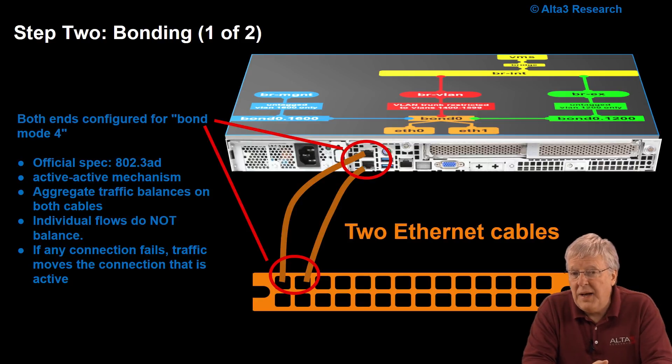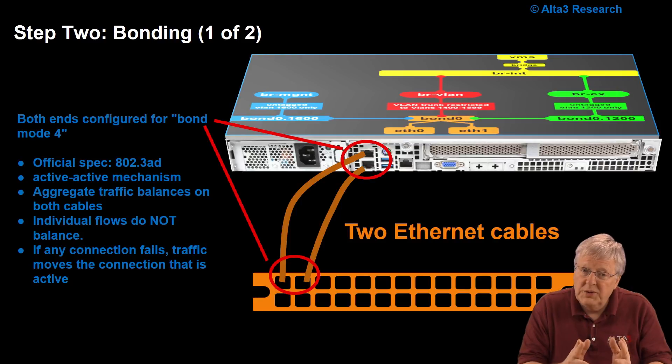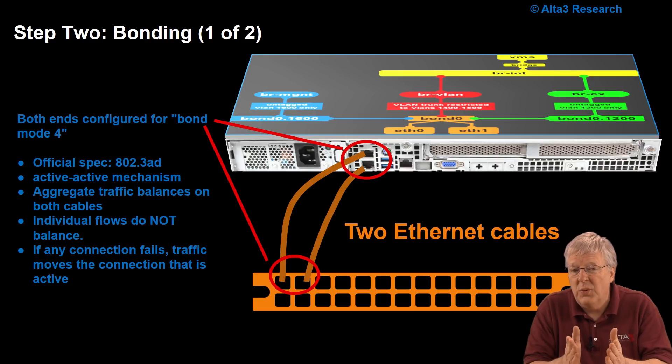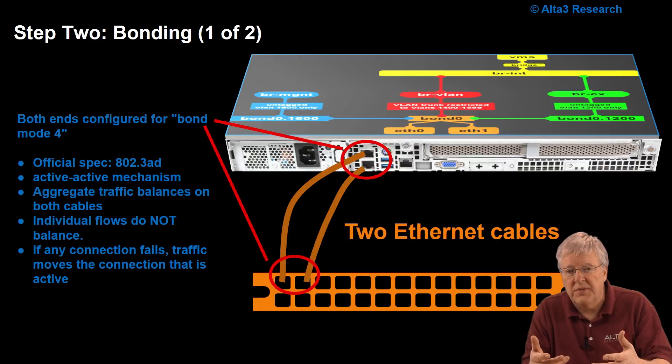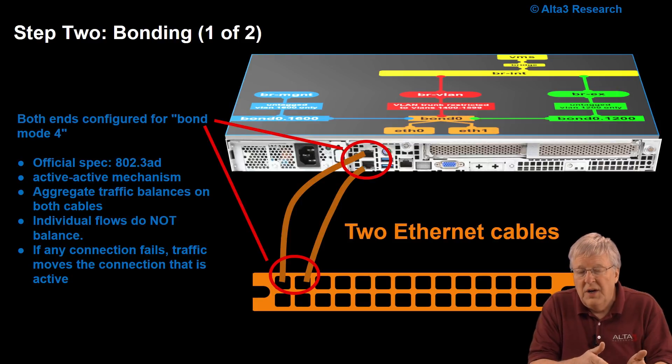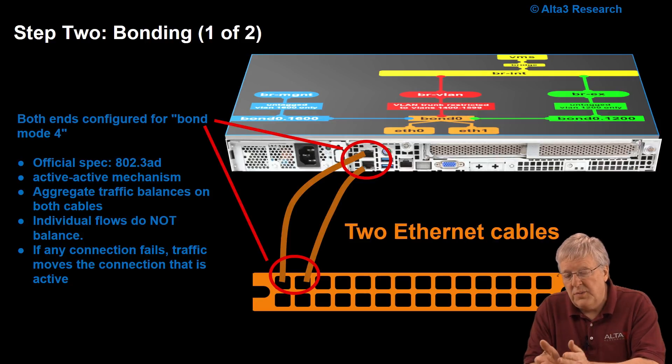So aggregate traffic balances on both of the cables. Individual flows, however, do not balance. This is a caveat. Any individual flow will always stick to one of those two cables. So no flow will ever exceed the speed of one of those cables. But the aggregate flow will spread evenly across both of them. If any connection fails, you can expect a failover from one of the active cables to the other in about 100 milliseconds.